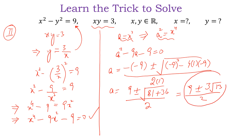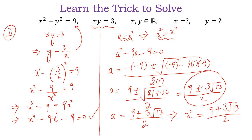We choose the positive value because the negative value gives an imaginary solution. So a equals (9 plus 3 root 13) divided by 2, which equals x squared equals (9 plus 3 root 13) divided by 2. Therefore x is equal to plus or minus the square root of (9 plus 3 root 13) divided by 2. This is the value of x.